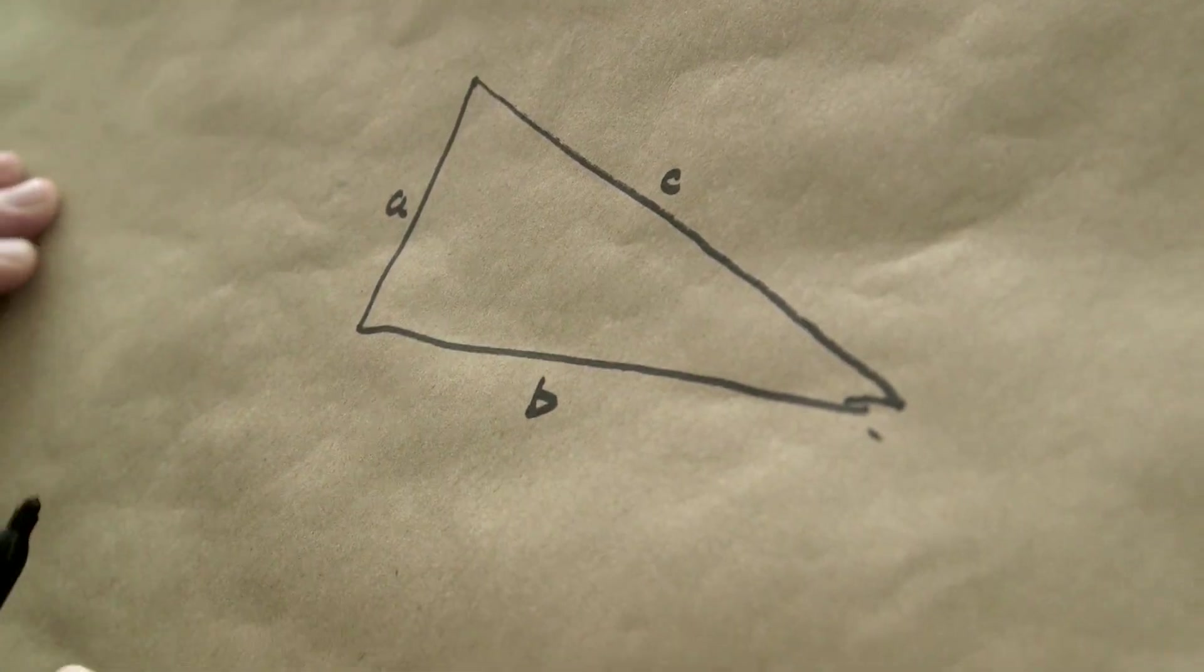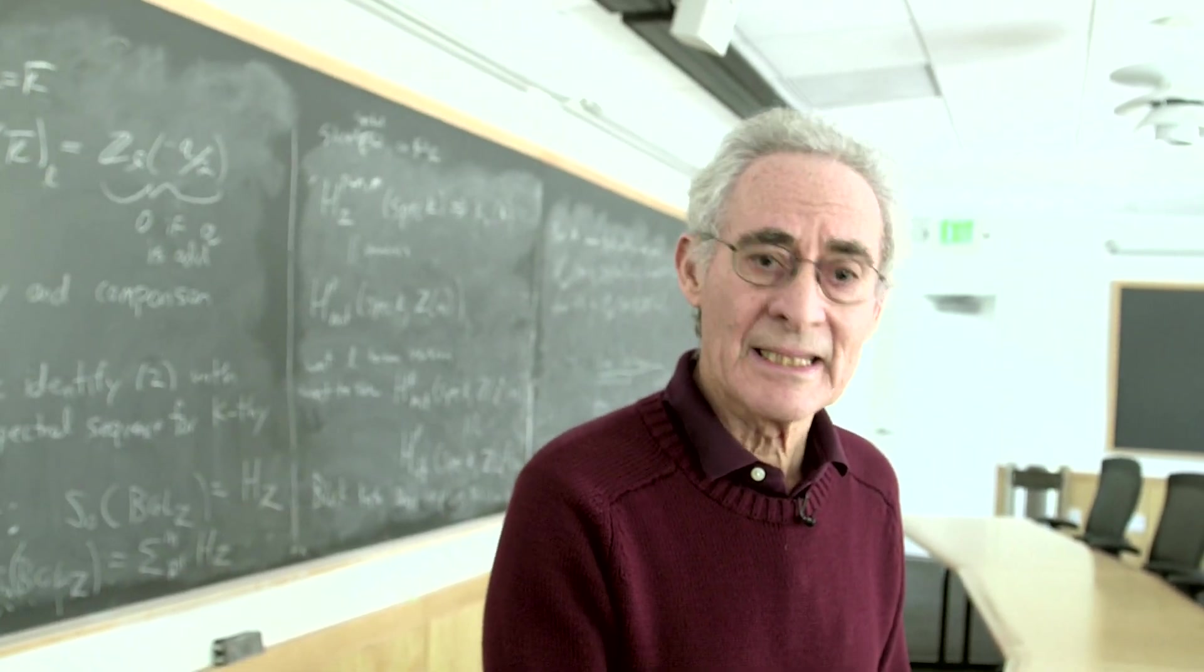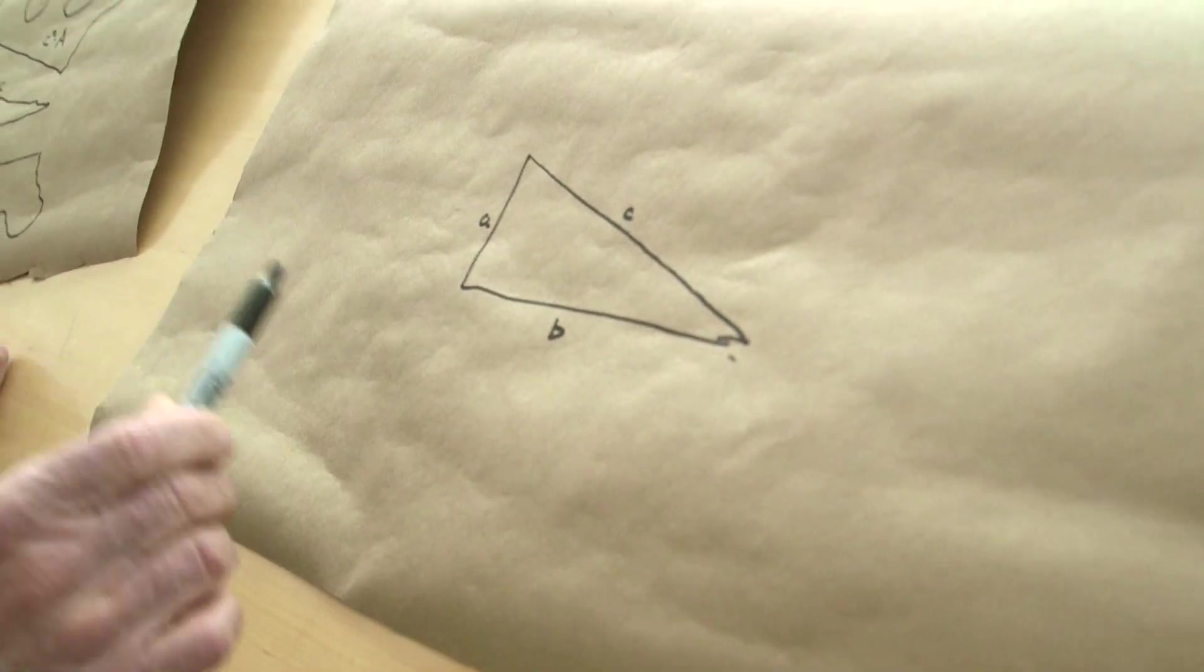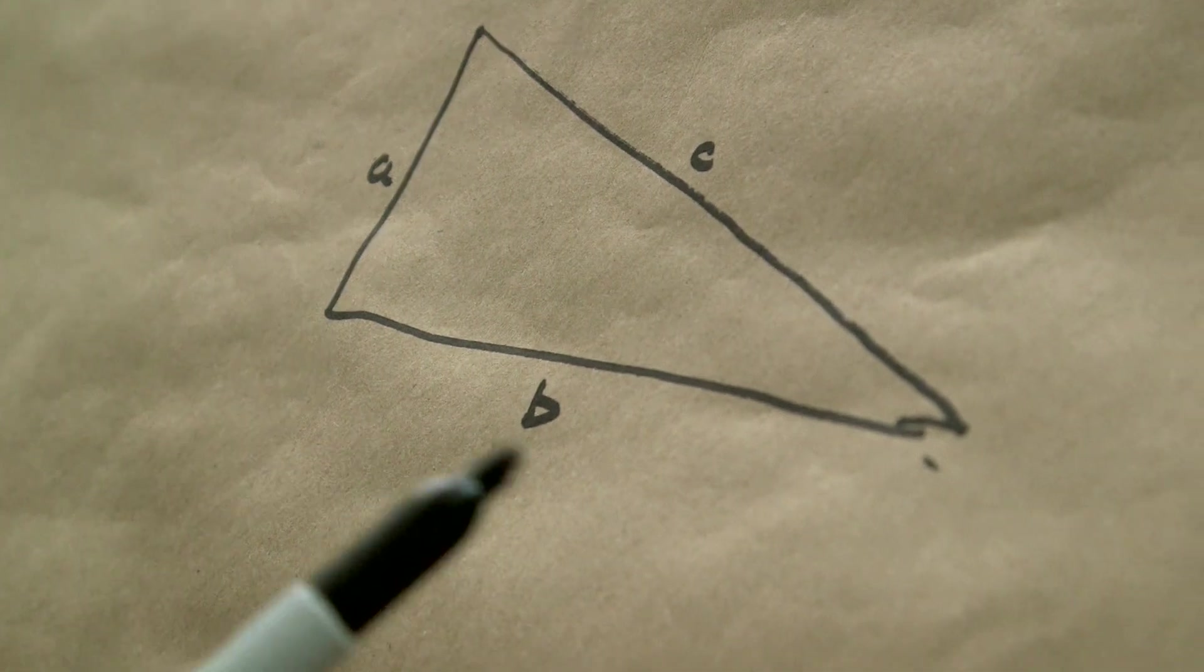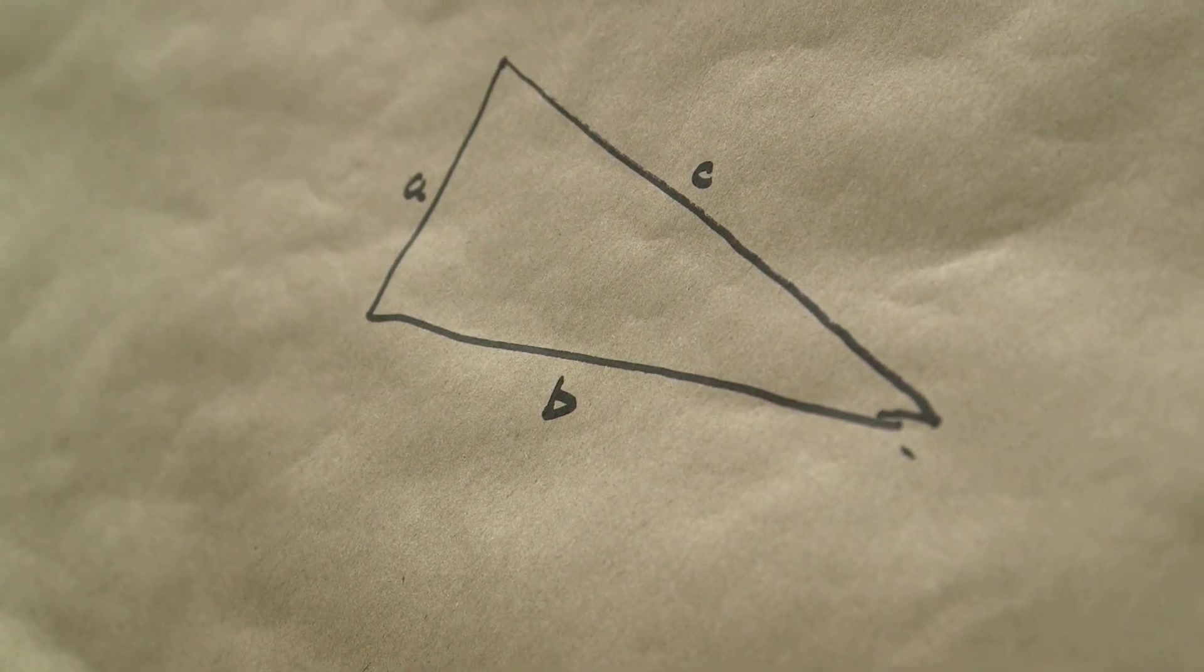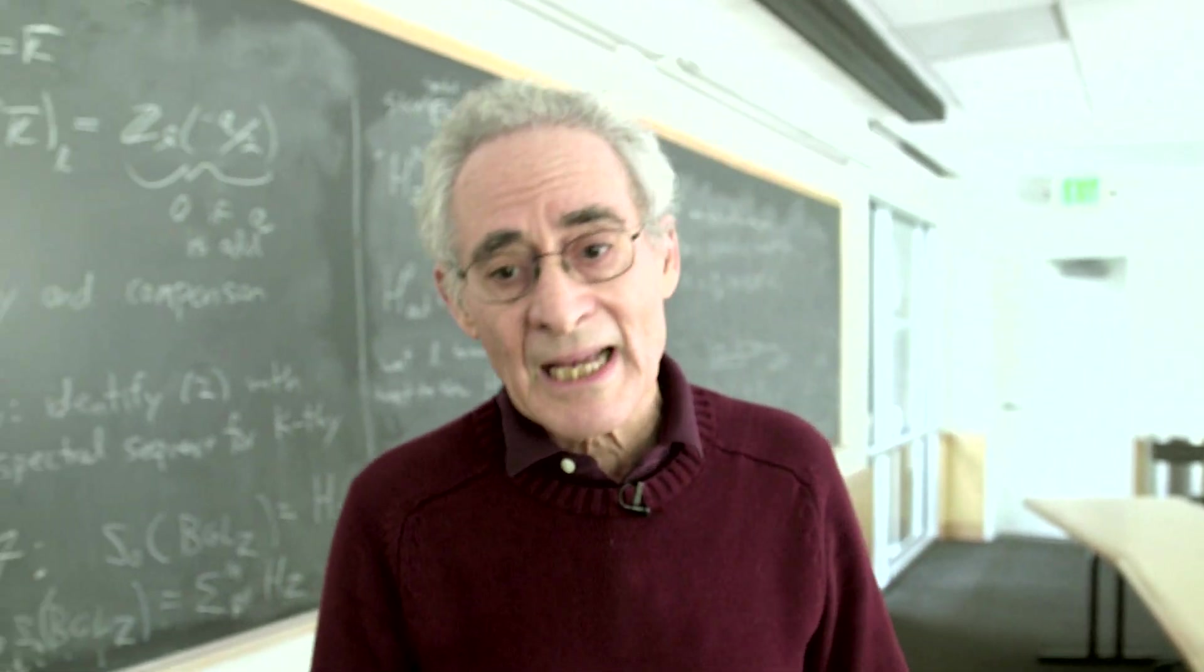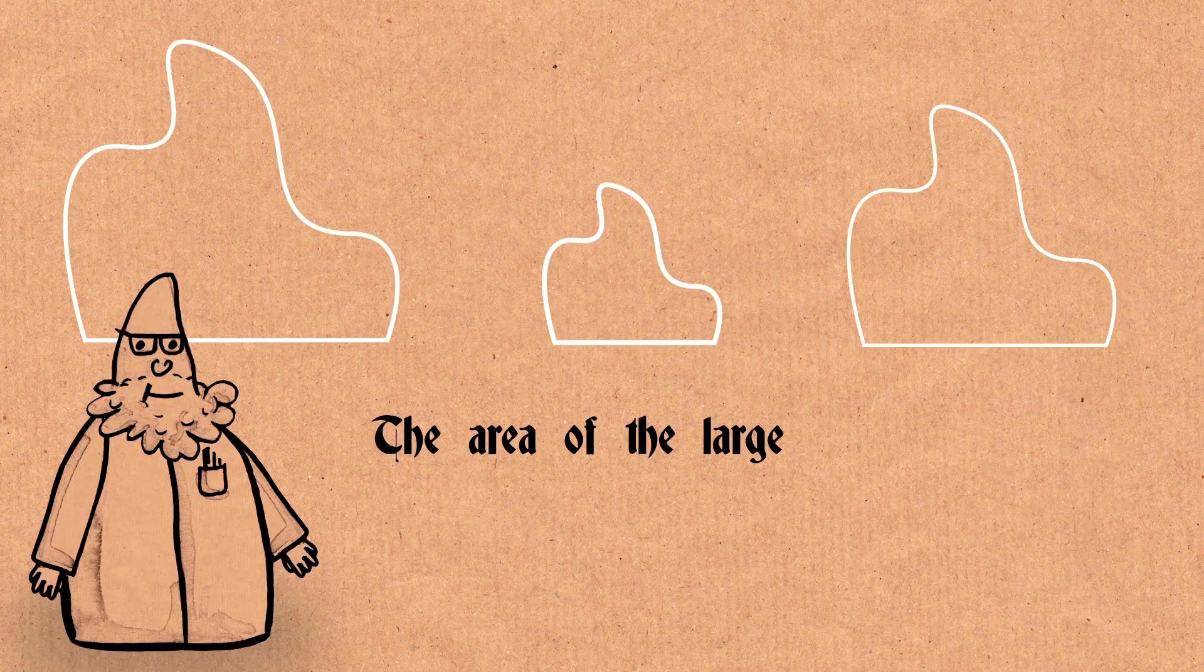a blob with a linear side of length B, that blob being similar to the blob of length C, and a blob with length A similar to the other two.